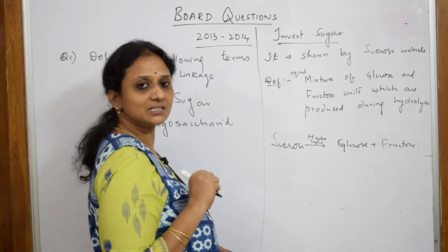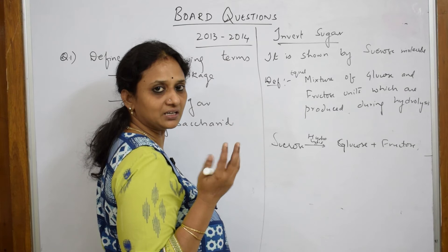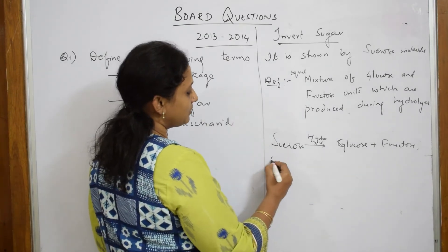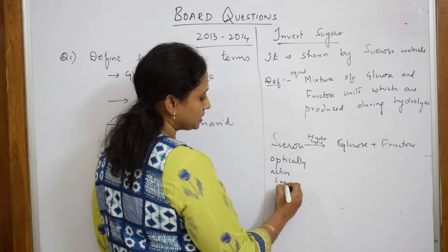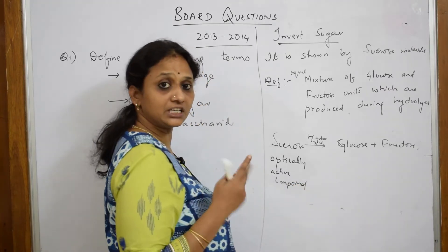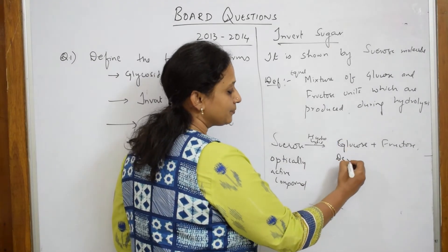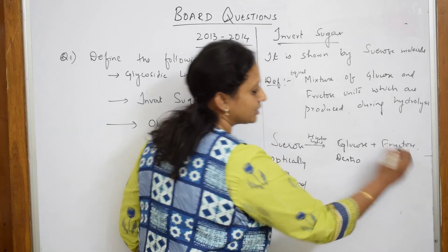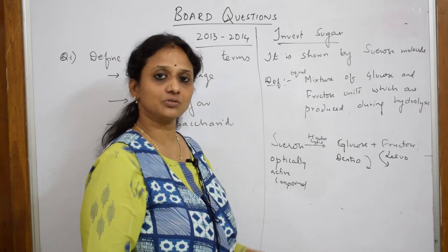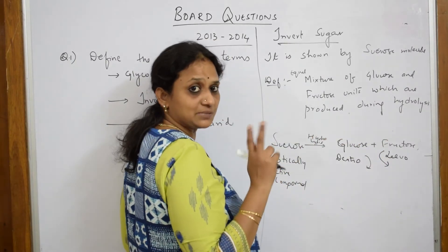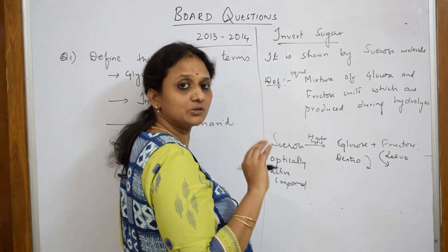Sucrose has optically active carbons because of its asymmetric carbons present in the structure, so sucrose is an optically active compound. When it is optically active, it rotates plane-polarized light in a clockwise direction — called dextrorotatory — while fructose will rotate it in the levorotatory direction. Clockwise is dextro, anticlockwise is levo. In sucrose, the levorotatory form of fructose has a greater optical rotation percentage than the dextro form.